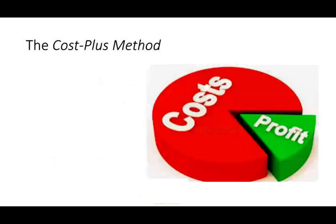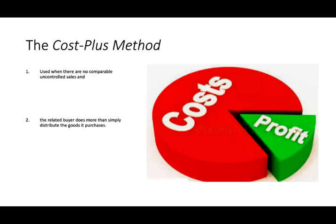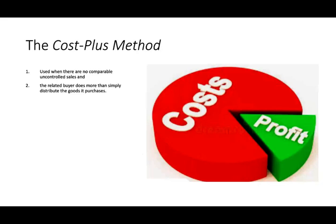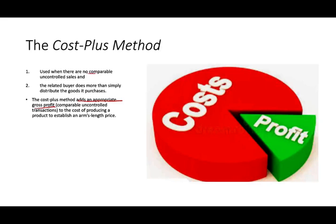Starting with the cost plus method. When do we use it? When there are no comparable uncontrolled sales — we cannot find something comparable to what we are doing — and the related buyer does more than simply distribute the goods it purchases. It's not like the resale price method where the party simply resells it; here, we sell something to another party, and they use it in their manufacturing process. The cost plus method adds an appropriate gross profit using a comparable uncontrolled transaction.